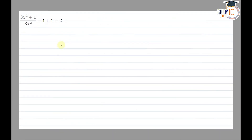Hello everyone. This question appears in Class 8 NCERT chapter on Factorization — it is Question 17 of Exercise 14.4. We have a statement to check: (3x² + 1) / 3x². We can write this as 3x²/3x² + 1/3x², where 3x² cancels out once.